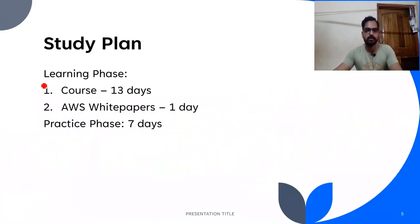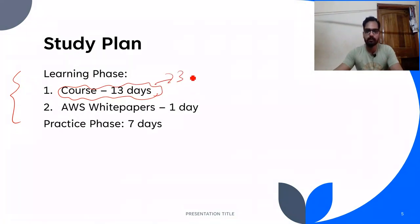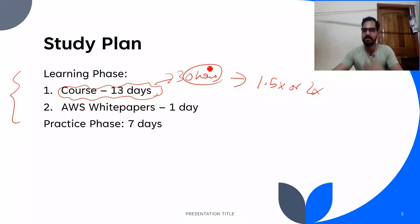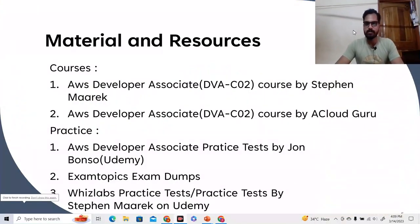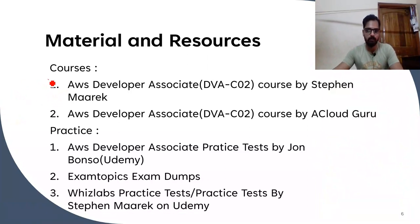Let's move to the study plan. Go through a course for 13 days or one week. Even if the course is 30 hours, you can easily finish it — one strategy I use is playing the video at 1.5x or 2x speed, which cuts the time in half. Keep one day for learning AWS white papers — I'll discuss the important ones shortly; just skim through them, no need to memorize. Then for the practice phase, keep at least seven days for practicing at the associate level.